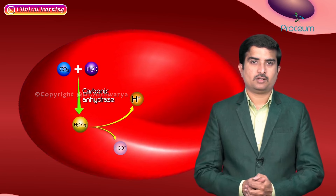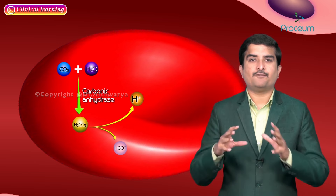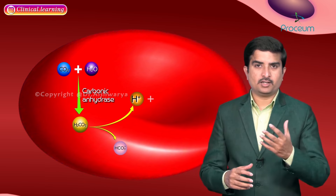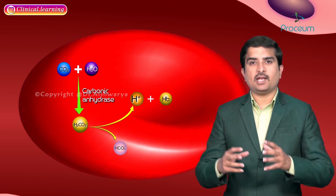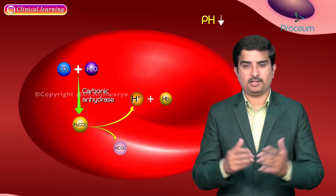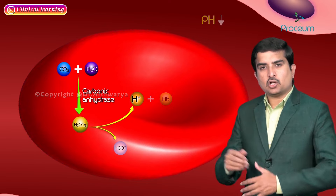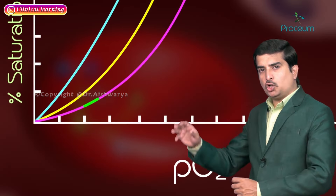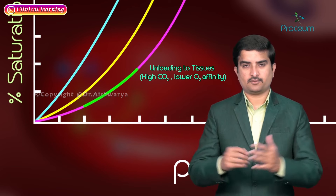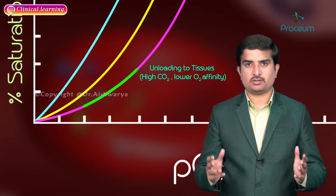Regarding the buffering effect of deoxyhemoglobin: one hydrogen ion is produced in the RBC for every bicarbonate ion produced. Most of these hydrogen ions are buffered by deoxyhemoglobin, causing only a small drop in plasma pH between the venous and arterial capillaries. When the hydrogen ion binds to hemoglobin, it also increases oxygen unloading at the tissues, corresponding to the right shift of the dissociation curve.